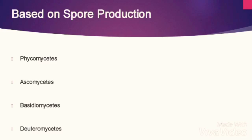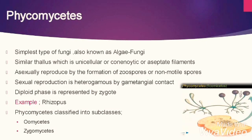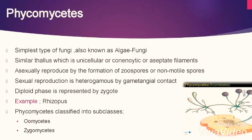Phycomycetes includes the simple type of fungi. It is also called algae fungi because most of their characteristics are similar to algae. They have a simple thallus which is unicellular, coenocytic, or aseptate filaments. They reproduce asexually by the formation of zoospores or non-motile spores. The diploid phase is represented by the zygote. Phycomycetes has been classified into subclasses: Oomycetes and Zygomycetes.